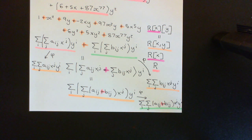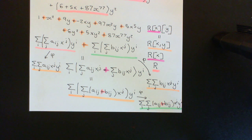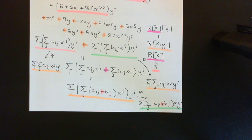The coefficient ring is now a ring of polynomials, but that doesn't matter. All we needed was the coefficient ring to be a ring, which the ring of polynomials is. So we instantly know this thing is going to be a ring.